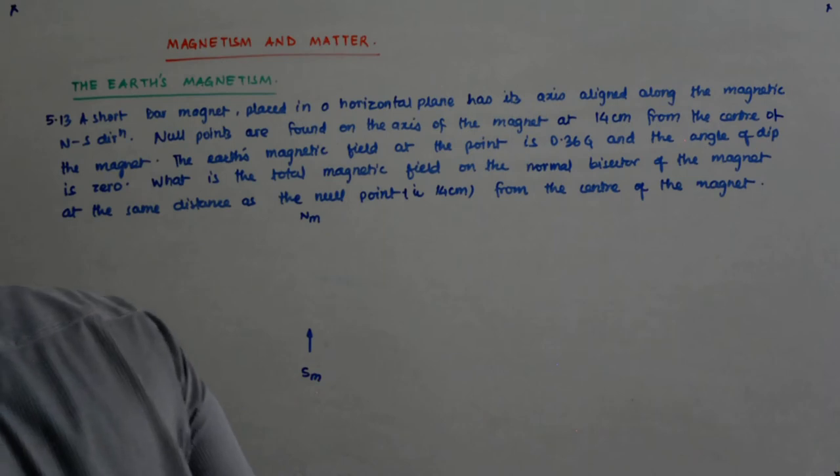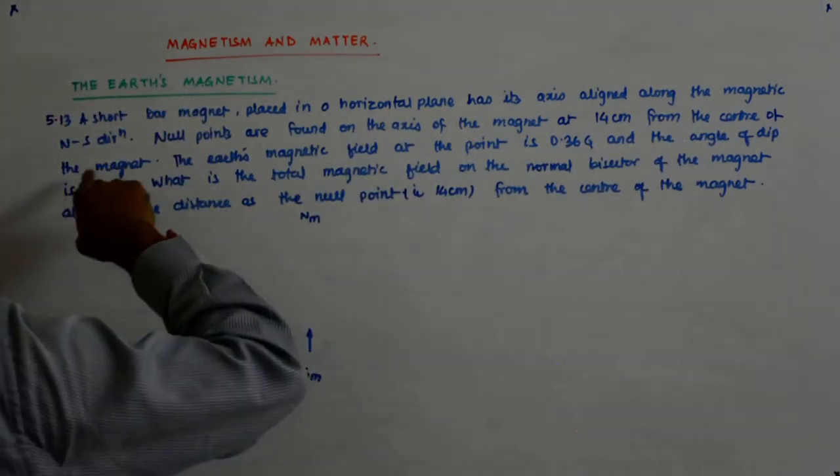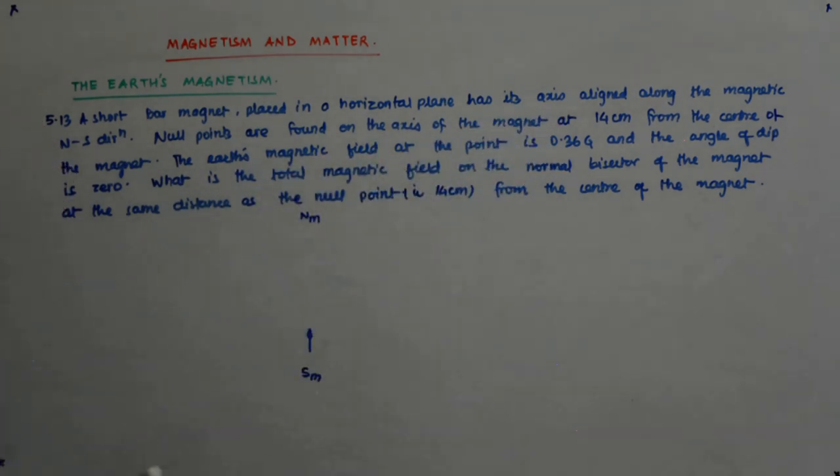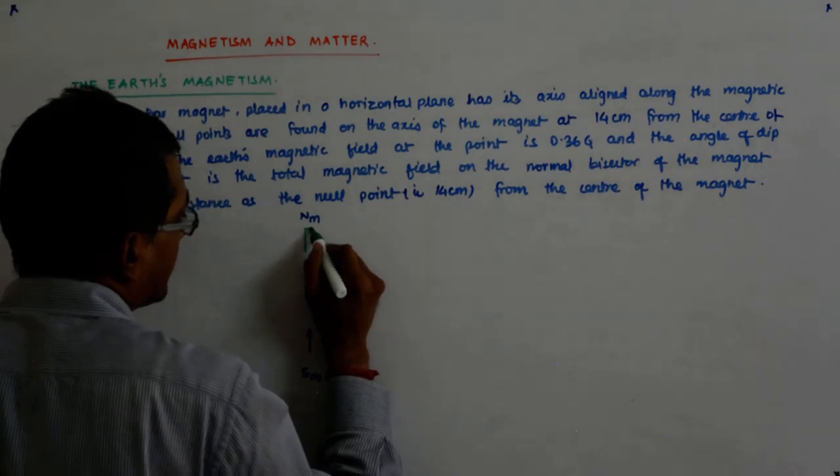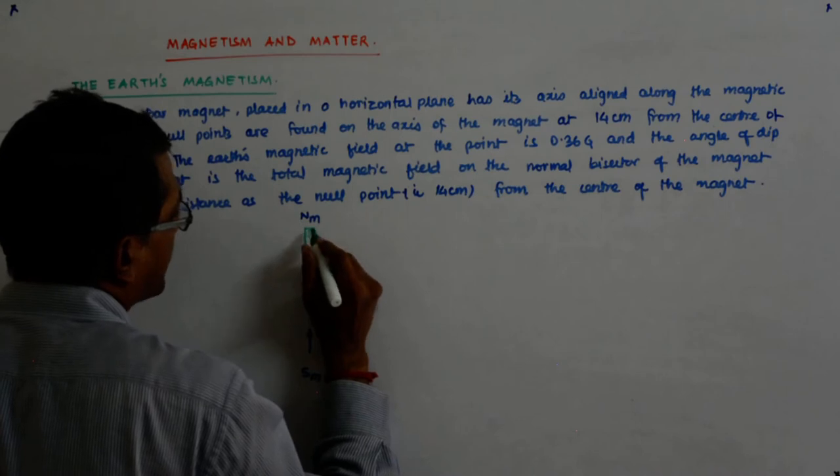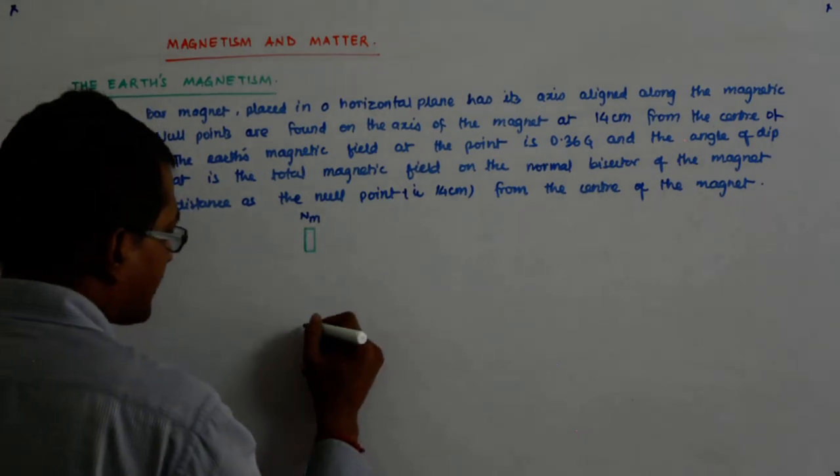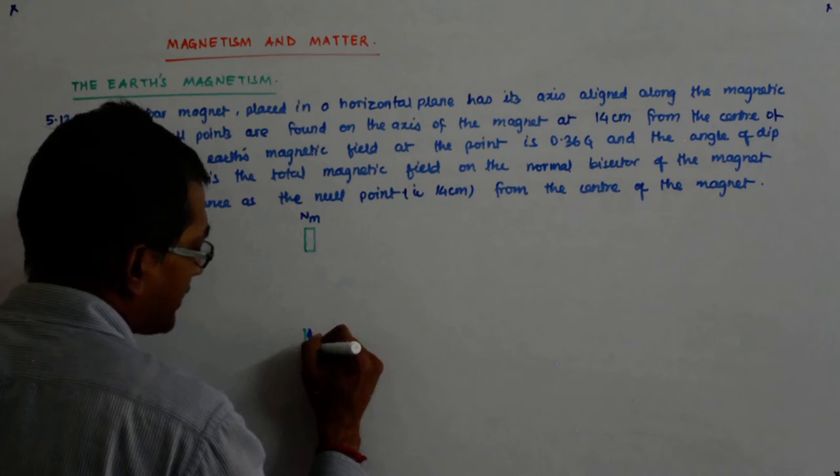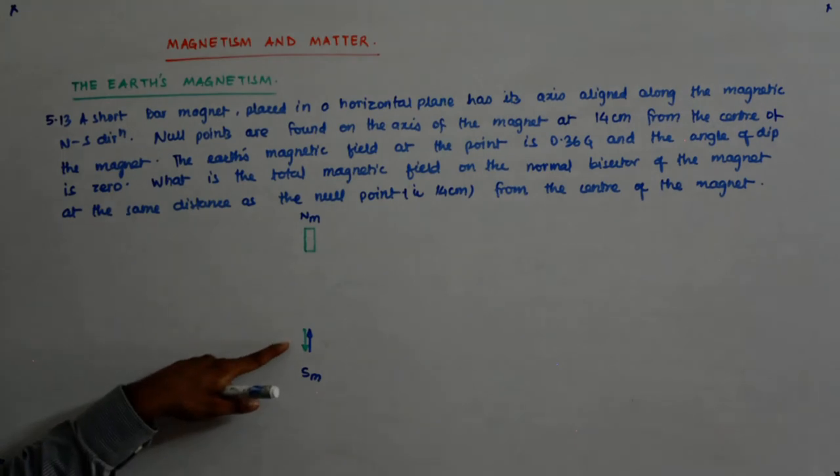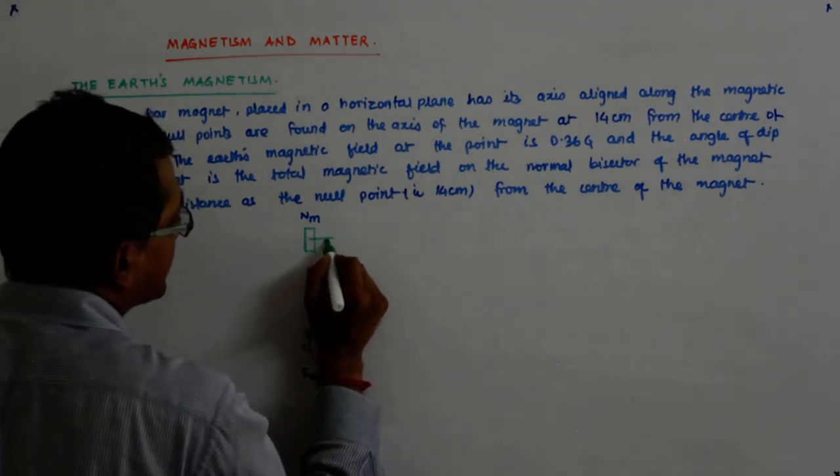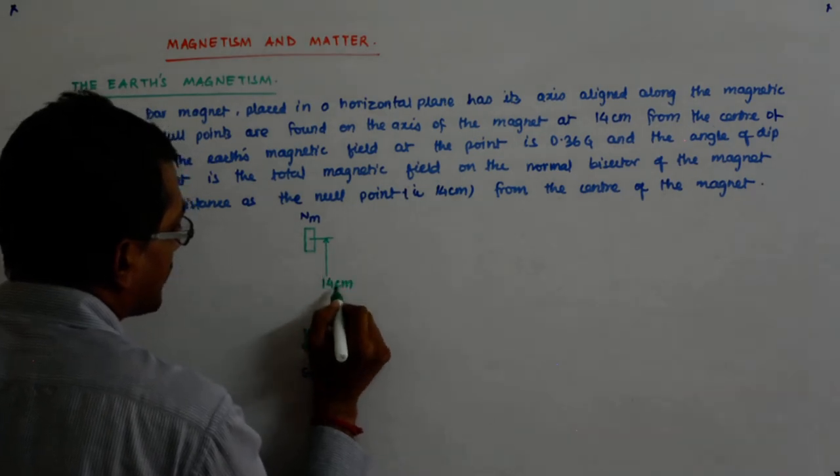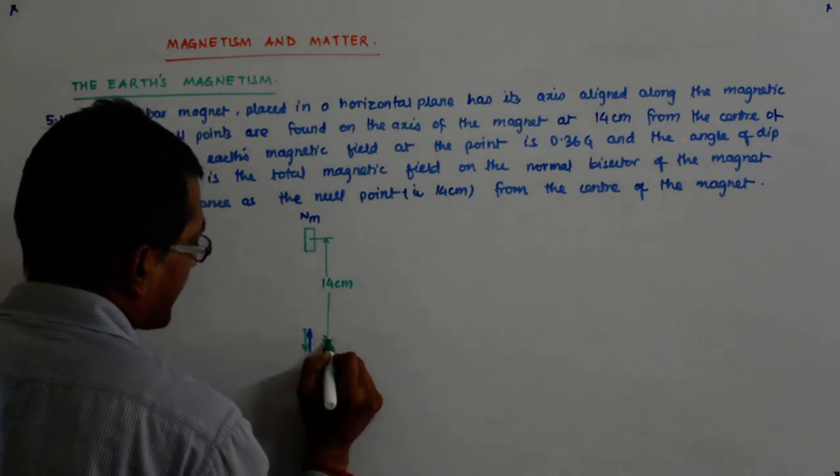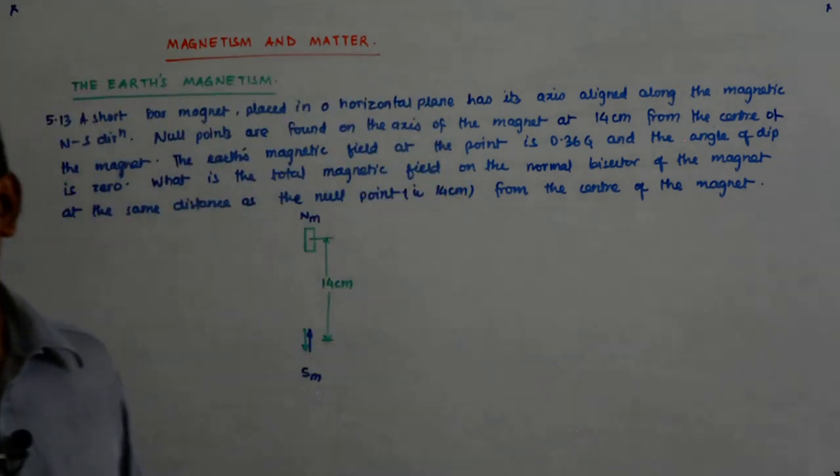If I have to put a magnet, null points are found on the axis of the magnet at 14 centimeters from the magnet. Now suppose I have a magnet here and I am forming a null point. At this very point, the field due to the magnet should be like this. Then only this becomes a null point. And I say that this distance is actually 14 centimeter. Then only it will form a null point.